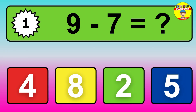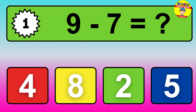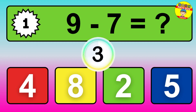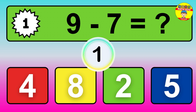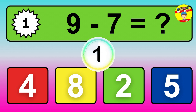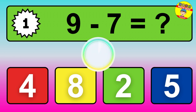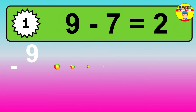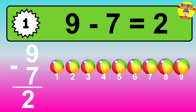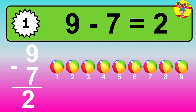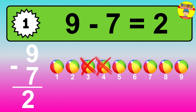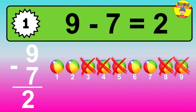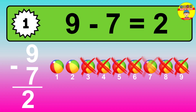Question 1: 9 minus 7 equals what? The answer is: 9 minus 7 is 2. Let's count it: 1, 2.